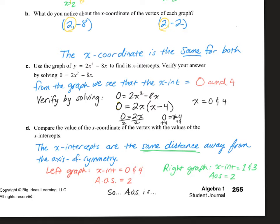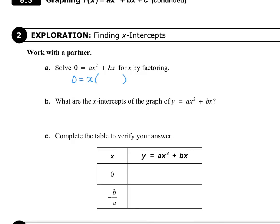The x-intercepts are the same distance away from the axis of symmetry. On the left graph we have x-intercepts of 0 and 4, and our axis of symmetry is 2. On the right graph, our x-intercepts are at 1 and 3, and our axis of symmetry is also 2. So the big conclusion here is that the axis of symmetry is the average of the x-intercepts. On the next page, we solve 0 equals ax squared plus bx, factor out x, leaving us with ax plus b, so that 0 equals x and also 0 equals ax plus b. Subtracting b and dividing by a, we get x equals negative b over a.